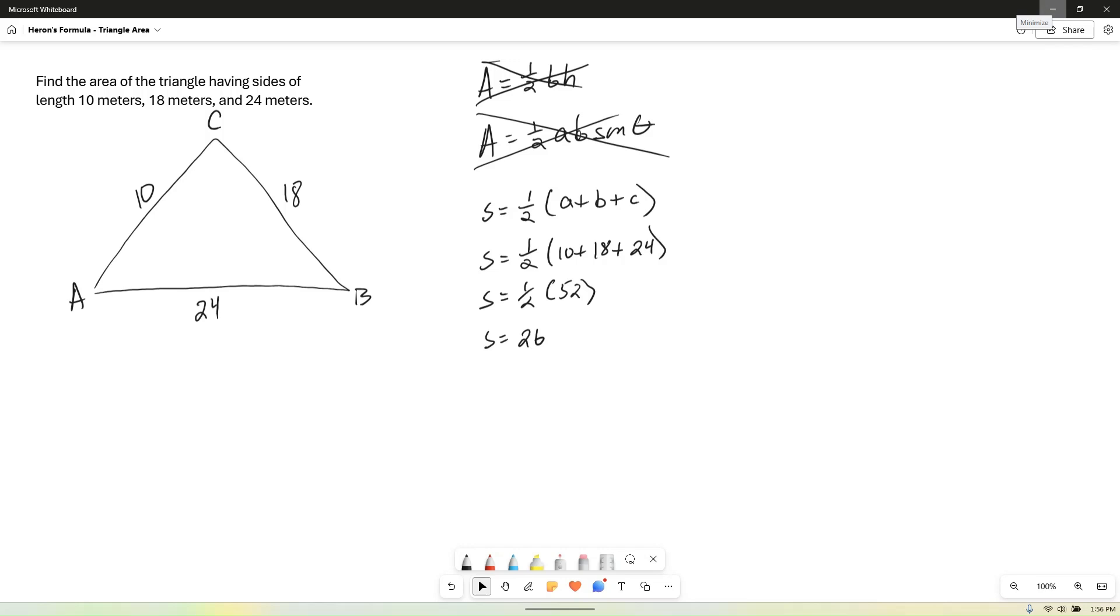So once we found the semi-perimeter, we can actually go to compute the area. Heron's formula says that the area is equal to the square root of S times S minus A times S minus B times S minus C. So we need to plug in S and then compute these three subtractions and then compute the square root. So we have the square root of 26 times 26 minus 18 times 26 minus 10 times 26 minus 24. And we can simplify that a little bit. We'll have 26 times 8 times 16 times 2, and all that's in the square root.